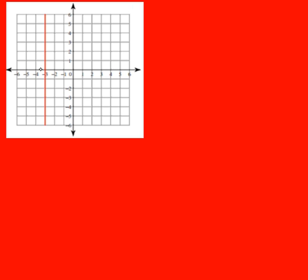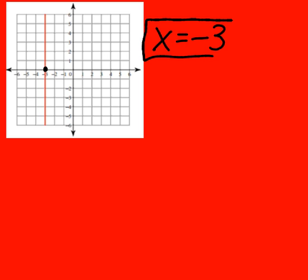We need to write a slope-intercept equation from this graph. This one's a little bit different because it's a vertical line — undefined slope. So what you're going to do: whatever axis it goes through, the x-axis, you put x equals, and then whatever the intercept is — negative 3. And that is your answer.